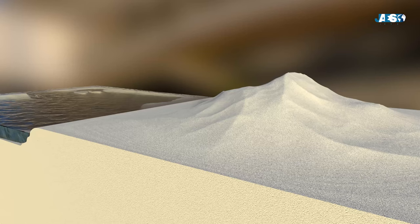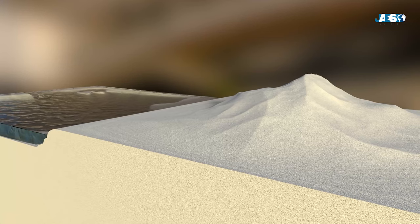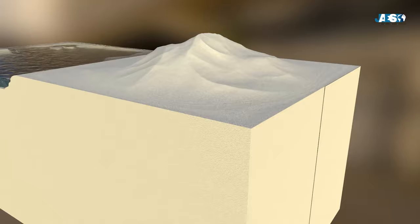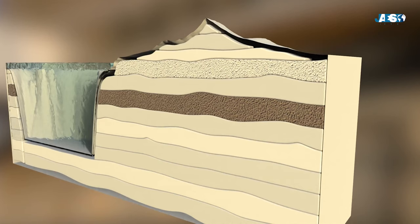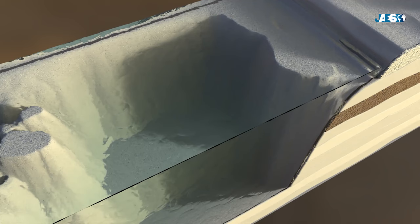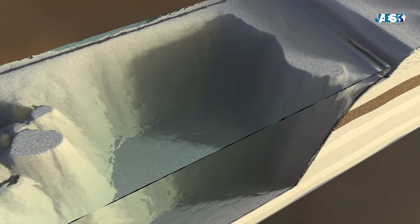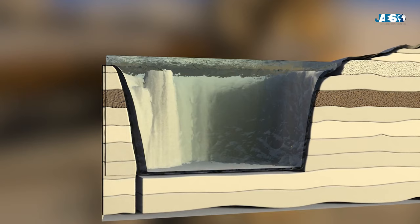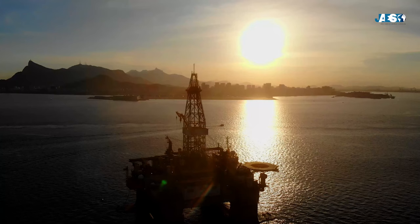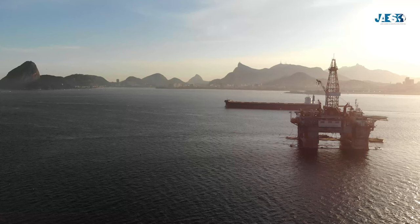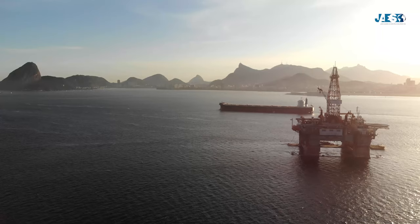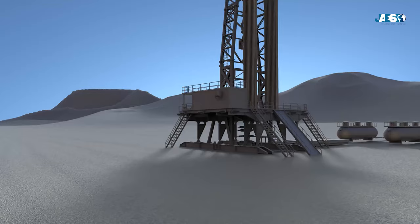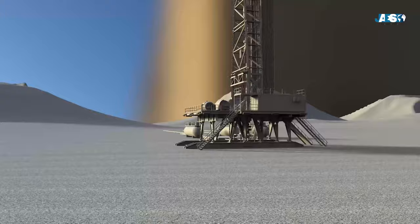The type of structure built to extract the gas can vary depending on the location of the field. When the reservoir is close enough to the earth's surface, the construction of the site and the gas extraction are easier. However, sometimes the deposit may be located under the seabed. In this case, the preparation of the site is more complex — it is necessary to build an offshore platform in the middle of the sea, from which all drilling and extraction operations can be managed. Whether on land or at sea, the drilling procedure is very similar.